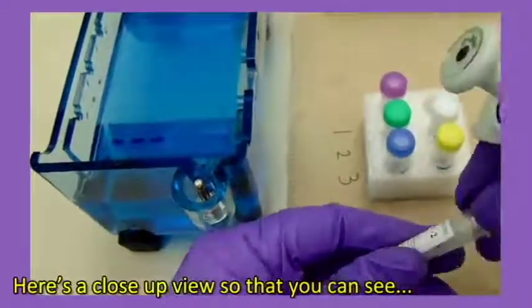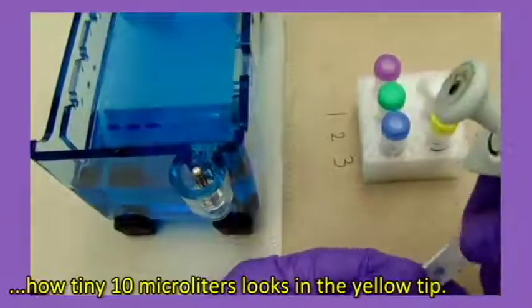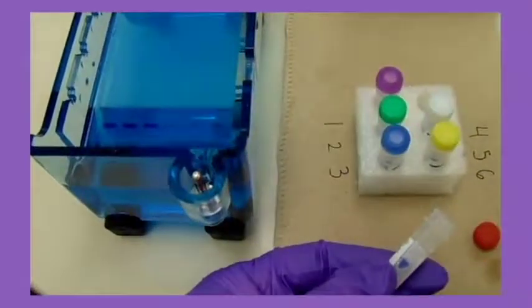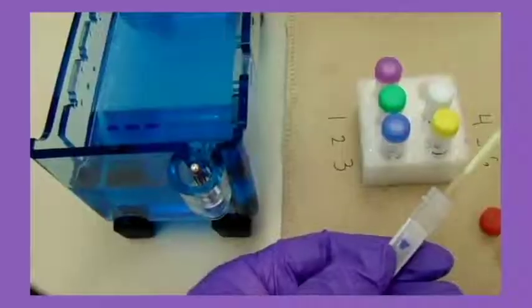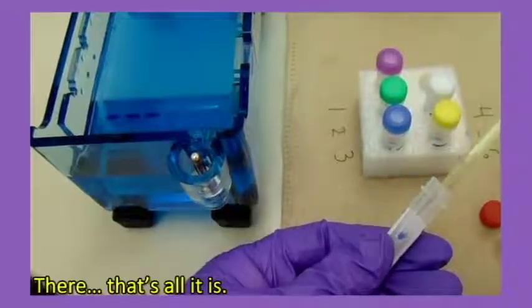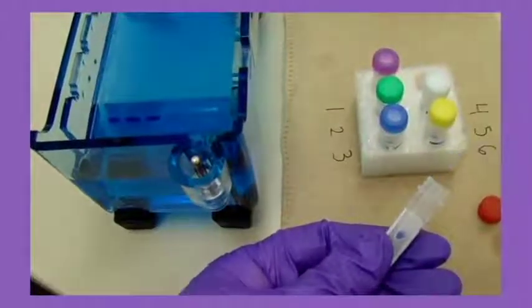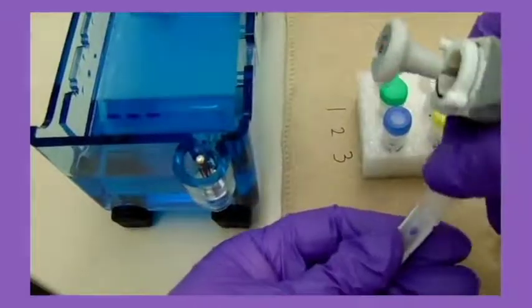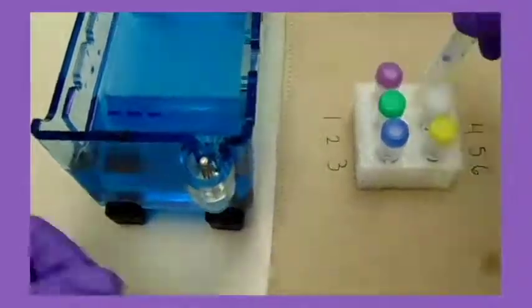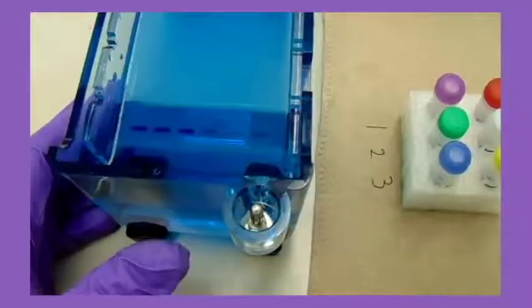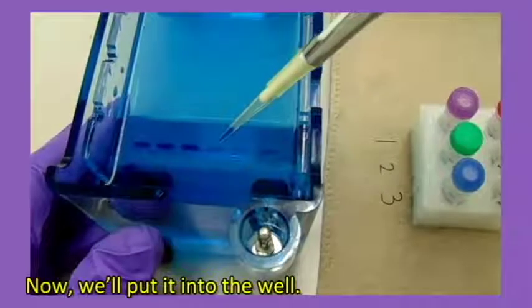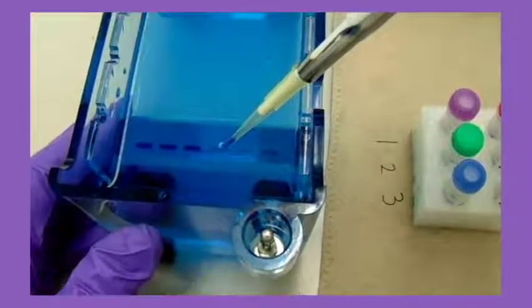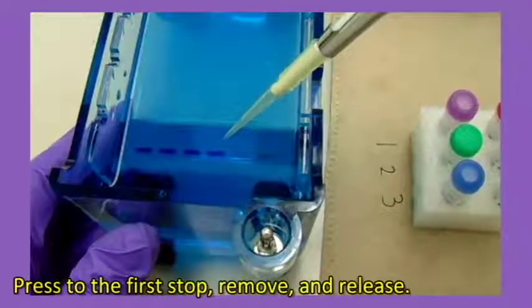Here's a close-up view so that you can see how tiny 10 microliters looks in the yellow tip. There, that's all it is. Now we'll put it into the well. Press to the first stop, remove and release.